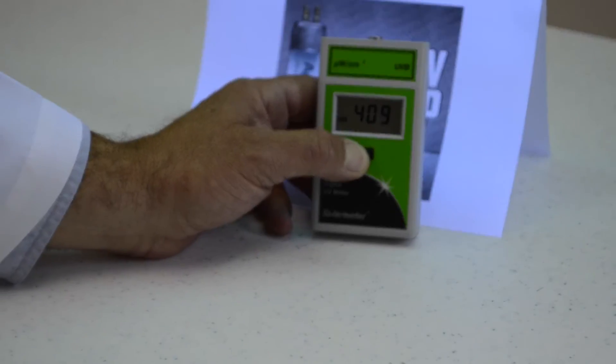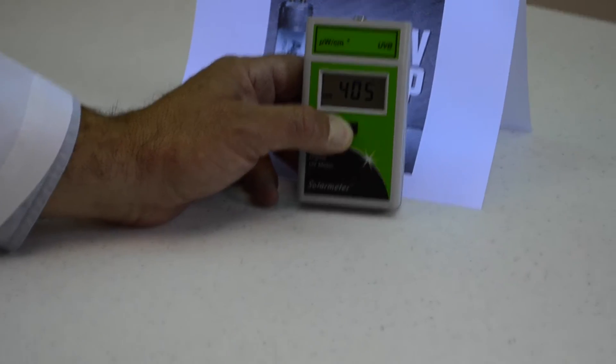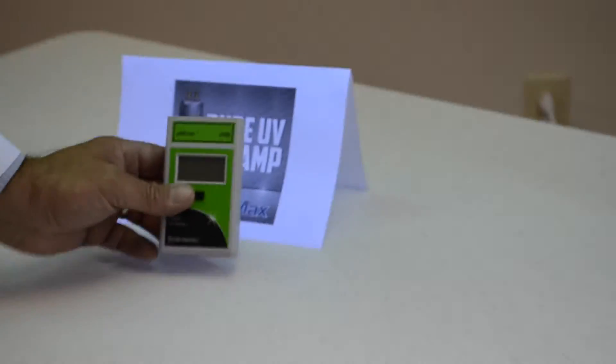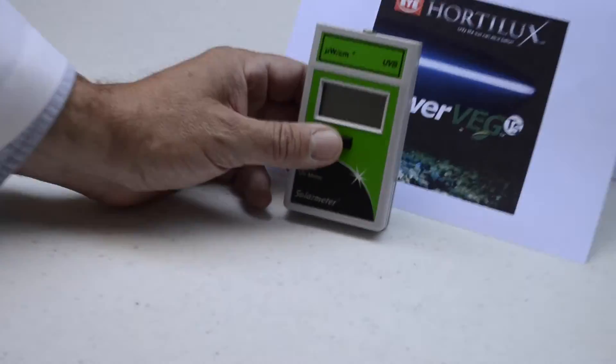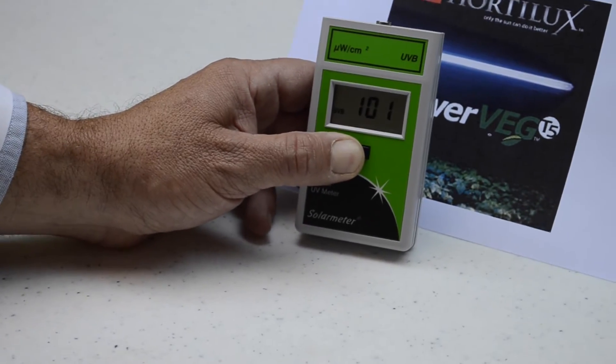The Pure UV from AgroMax is testing out a little over 400, and the Hortilux PowerVeg is a little over 100.